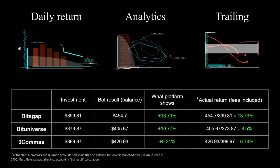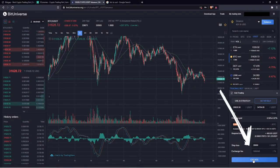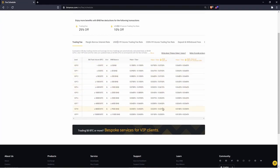The final results: the first column shows investment value allocated to each bot, the next shows final investment value when bots were closed, then returns displayed on each platform, and the most interesting column calculates exact return with fees taken into account. Since BitsGap deducts fees automatically with each transaction, the actual return matches what the platform shows. At BitUniverse and 3Commas fees are excluded, so the actual return is less. BitUniverse does offer an option to set a fee percentage, but you have to find the exact rate for limit orders on your exchange, which takes time — and in trading, time is money.